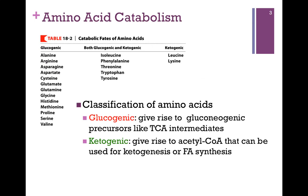We can classify amino acids by their breakdown products. Those that give rise to gluconeogenic precursors, like the citric acid cycle intermediates, are glucogenic — that is, those intermediates can be used to generate glucose. Those whose breakdown products include acetyl-CoA are referred to as ketogenic, because they can be used in ketogenesis or for fatty acid synthesis.